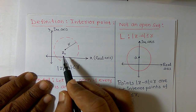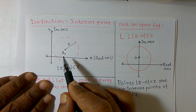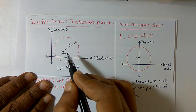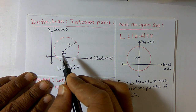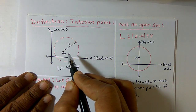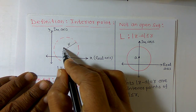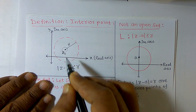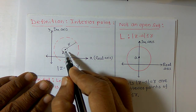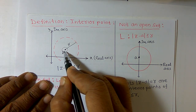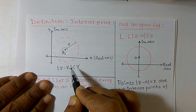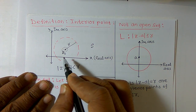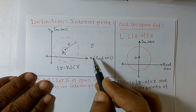Now I want to verify whether z0 is an interior point or not. Suppose I want to call it an interior point, then I need to construct an open disk around z0 by taking a small radius. If all the points in this small open disk belong to s, then I can say that z0 is an interior point.